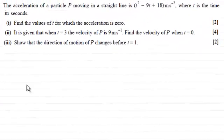Hi, now in this question we're told that the acceleration of a particle P moving in a straight line is t squared minus 9t plus 18 meters per second per second, where t is the time in seconds.